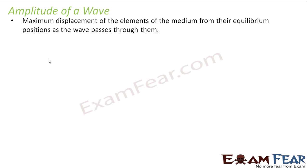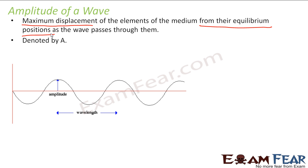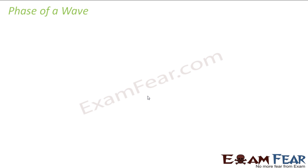What is amplitude of a wave? It is the maximum displacement of the elements of the medium from their equilibrium position as the wave passes through them. It is generally denoted by capital A. For a sinusoidal wave, the maximum displacement from the equilibrium or mean position — represented by the red line — is defined as the amplitude of the wave.